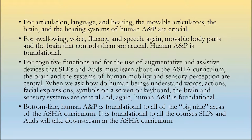For cognitive functions and for the use of augmentative and assistive devices that SLPs and AUDs must learn about in the ASHA curriculum, the brain and the systems of human mobility and sensory perception are central. When we ask how do human beings understand words, actions, facial expressions, symbols on a screen or keyboard — the brain and the sensory systems are crucial. Bottom line: human anatomy and physiology is foundational to all of the big nine areas of the ASHA curriculum, and this course is foundational to all courses that SLPs and AUDs will take downstream.